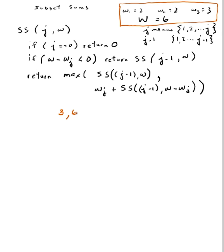And so I have these three items right here and that upper bound that I'm working with right there. So the first time I call my function, I'm going to call it with SS(3, 6), and my initial weight is my initial 6.